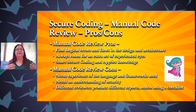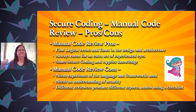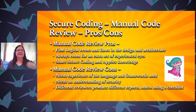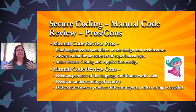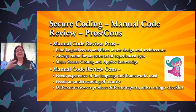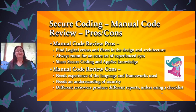If you do manual code reviews you find logic errors and flaws in the design and architecture. You have room for an extra set of experienced eyes — not just an automated tool checking it, but experienced people including a security person with AppSec knowledge. The cons: you need someone experienced with the language and frameworks, and if you're not using the checklist you're going to get different reports each time, which is why using a checklist is recommended.